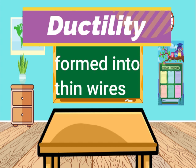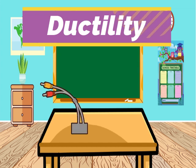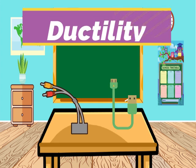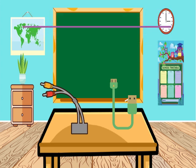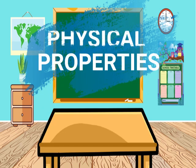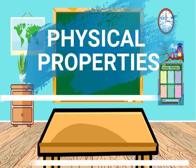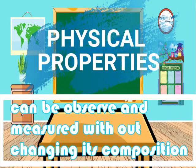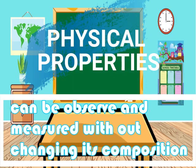The wires in your cell phone charger, headphones, and other electrical cords of appliances are examples of ductile materials. These properties of materials are also known as physical properties. Physical properties are the characteristics of matter that can be observed and measured without changing its composition.